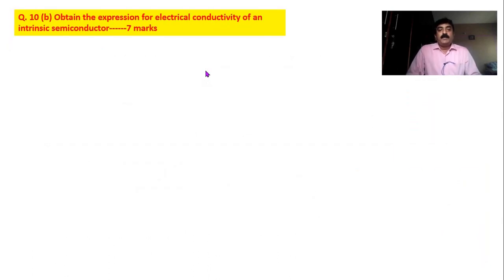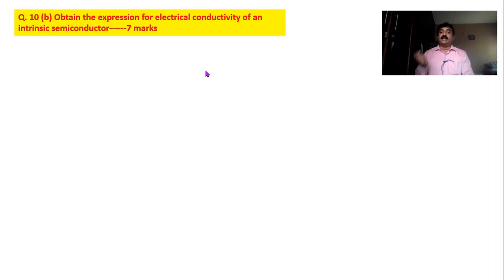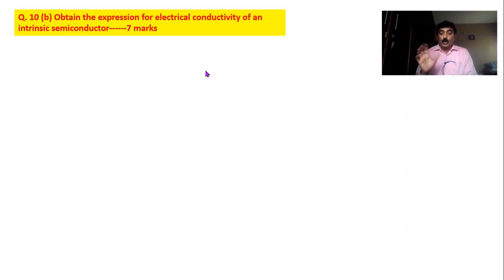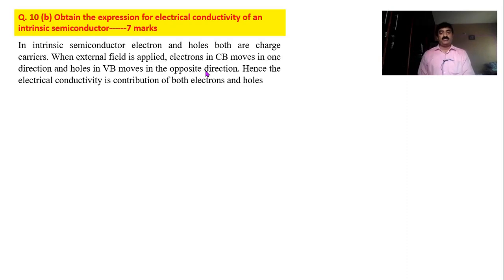Now moving to the next question: obtain the expression for electrical conductivity of an intrinsic semiconductor. In a semiconductor we have two types of charge carriers — electron and hole — therefore we get two conductivities: conductivity due to electrons as well as holes. That is the added advantage of semiconductors. In conductors only electrons are charge carriers, whereas in semiconductors current is carried by both electrons and holes. Therefore sigma equals sigma-e plus sigma-h.